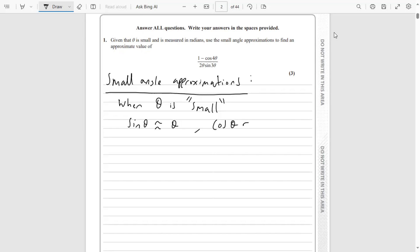And cos θ is approximately 1 - θ²/2. You've also got tan as well but we don't need that for this specific question.